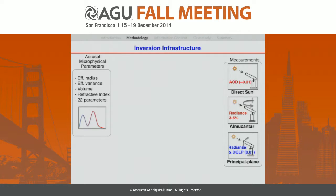On the left is what we get from the sun photometer: direct radiance AOD, sky radiance in the solar almucantar and principal plane, and with newer generation sun photometers, multi-spectral polarization data. On the right are the parameters we want to retrieve: effective radius, effective variance, volume, and refractive indices associated with a bimode log-normal distribution, accounting for 22 parameters total.